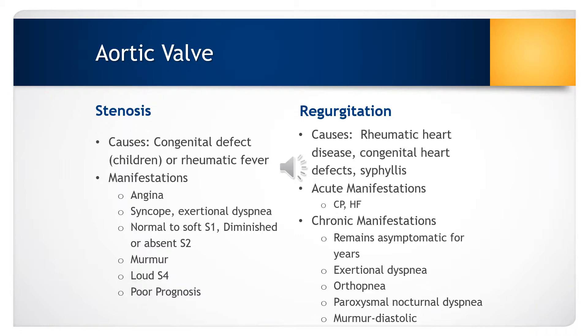Typically, the patient will be asymptomatic for many years, but as pulmonary hypertension and right ventricular failure increase, the patient will have exertional dyspnea, orthopnea, paroxysmal nocturnal dyspnea, and may have a diastolic heart murmur.